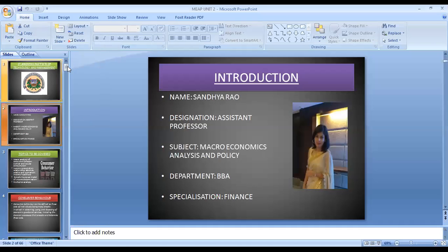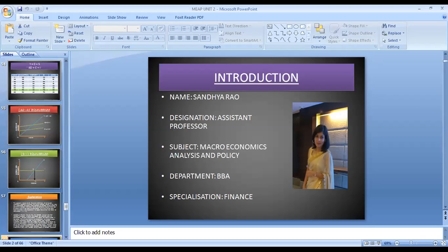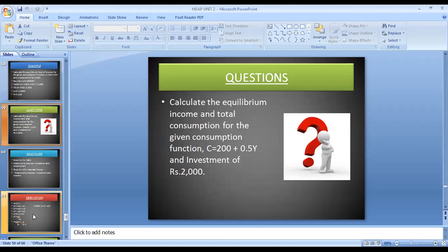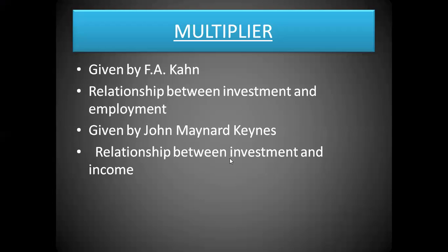This is the last topic of the second unit, and after this we'll be done with unit two. In the last lecture we covered the AD-AS Income Determination Model given by John Maynard Keynes. There were two theories of the multiplier given by different economists. The first was given by F.A. Khan, who tried to establish a relationship between investment and employment. The other, given by John Maynard Keynes, establishes a relationship between investment and income. Here we'll be talking about the Keynesian version, not F.A. Khan's.